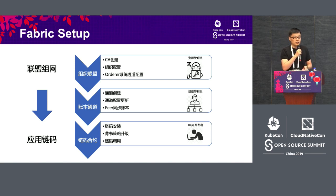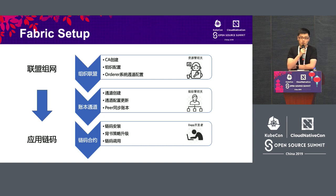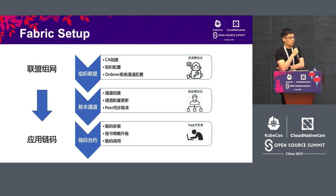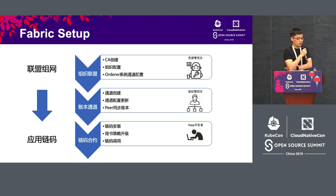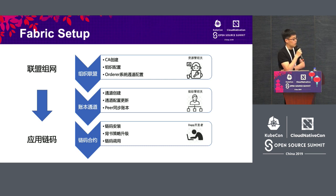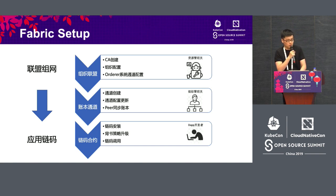Let's see how fabric is deployed. I've divided that into three steps. The first step is to build an organizational consortium — you need to establish the CA and then these organizations can be linked into a system channel. For the second step you need to build a ledger channel, because ledgers cannot be shared between different channels. The channel is established by the organization. For the third step, you need the chaincode deployment, because the format of the ledger and transaction is not defined yet. After you do these things the fabric consortium will be completed.